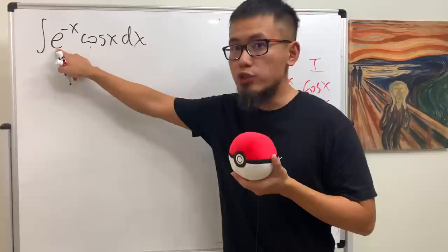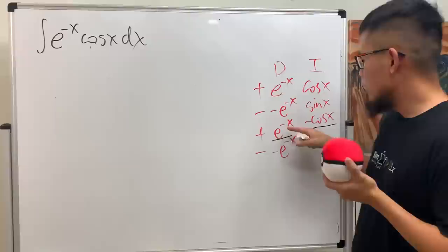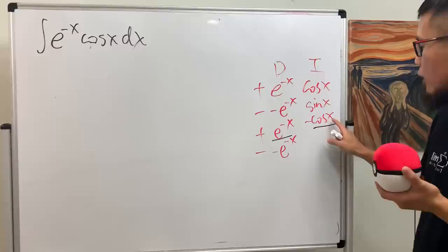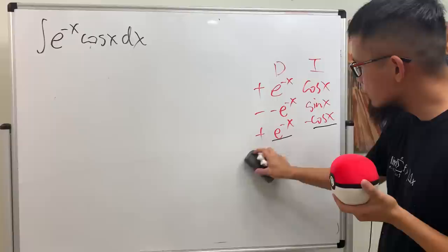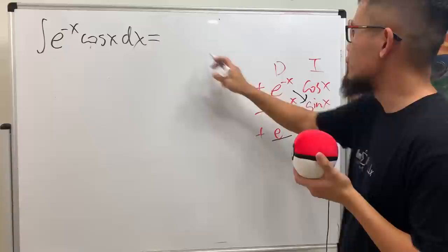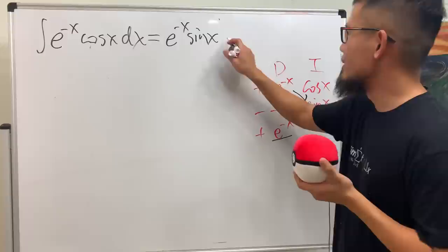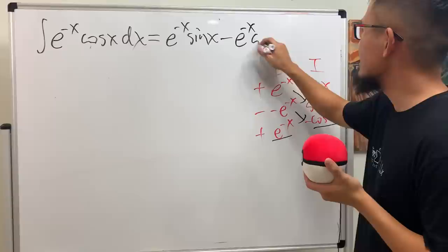Pay attention to the function part. Originally we have e to the negative x times cosine x. Here we have e to the negative x, and here we have cosine x again. The third stop is: if the function part of a row repeats the original integrand — ignoring any constants — you stop. So you don't need to go further. This times this gives e to the negative x sine x, and then this times that — negative times negative times negative — gives negative e to the negative x cosine x.